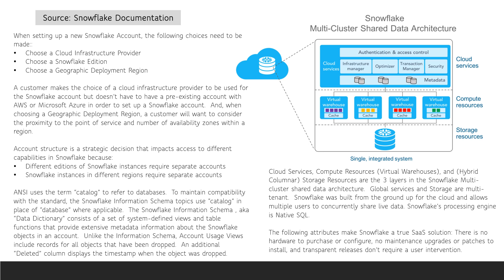One final basic concept is about the Snowflake Information Schema, which is also known as the Data Dictionary. The Snowflake Information Schema topics use the word 'catalog' in place of 'database' in order to maintain compatibility with the ANSI standard. The Snowflake Information Schema provides extensive metadata information about the current Snowflake objects in an account, but not about dropped objects. Unlike the Information Schema, the Account Usage View includes records for all objects that have been dropped, and an additional deleted column displays the timestamp when the object was dropped. This is an important distinction between the Snowflake Information Schema and the Account Usage View.